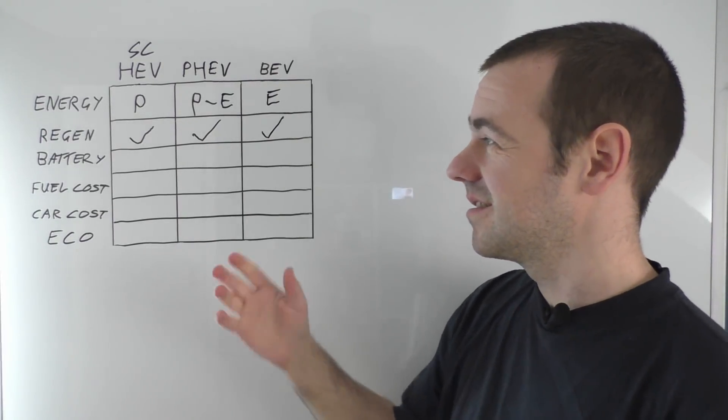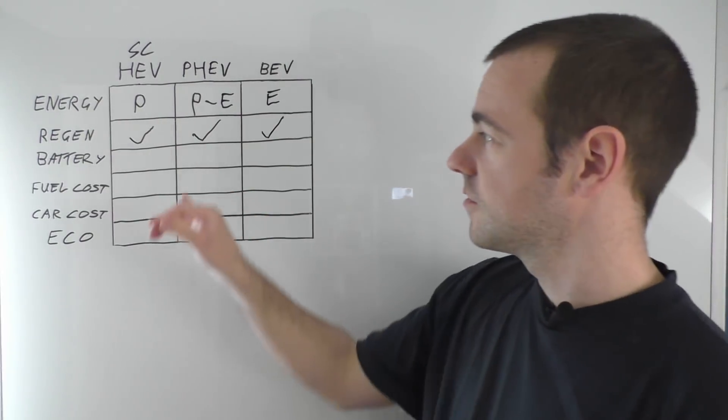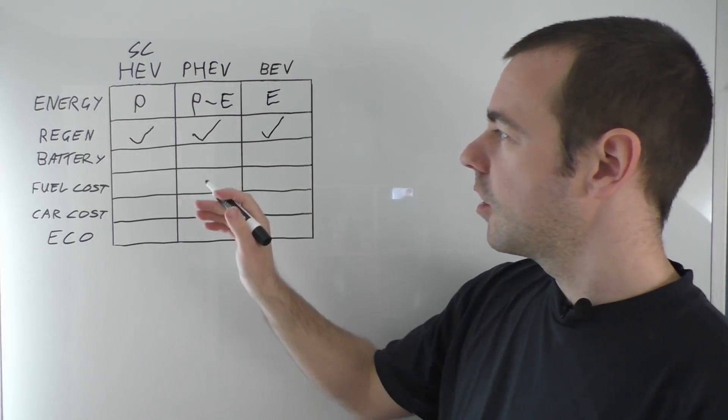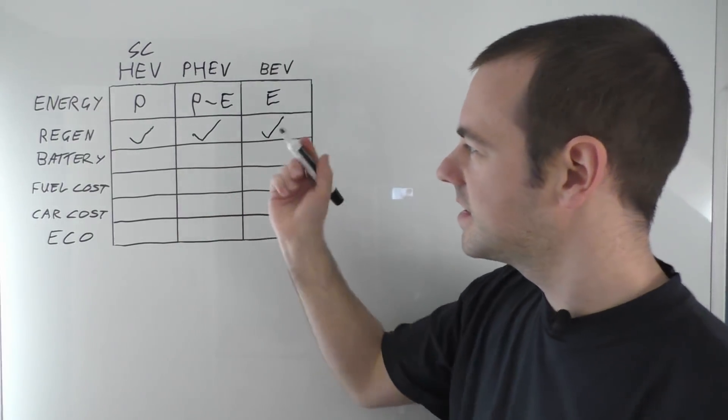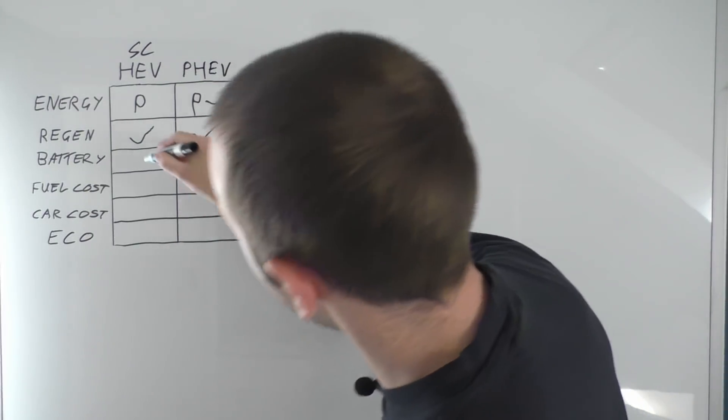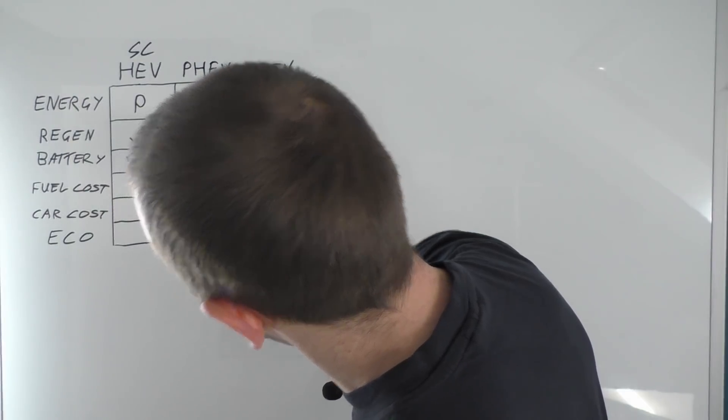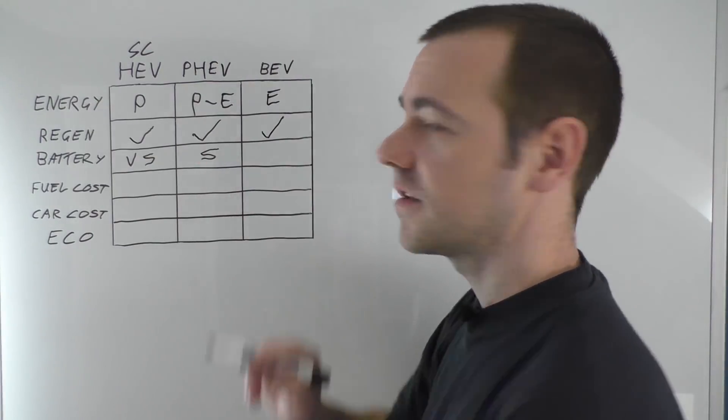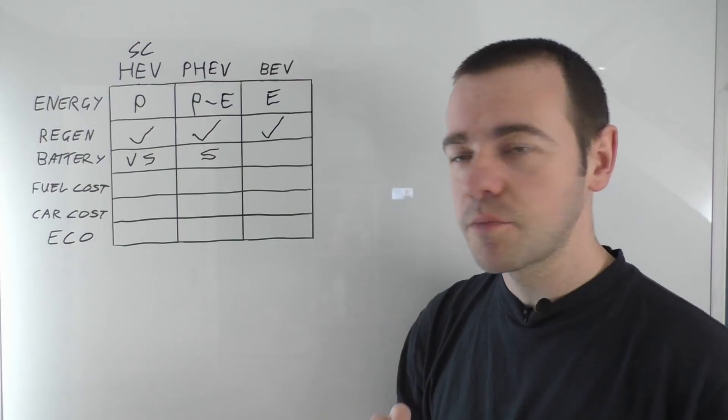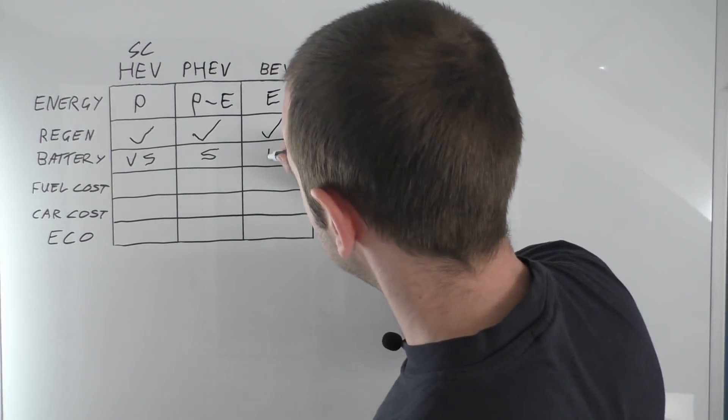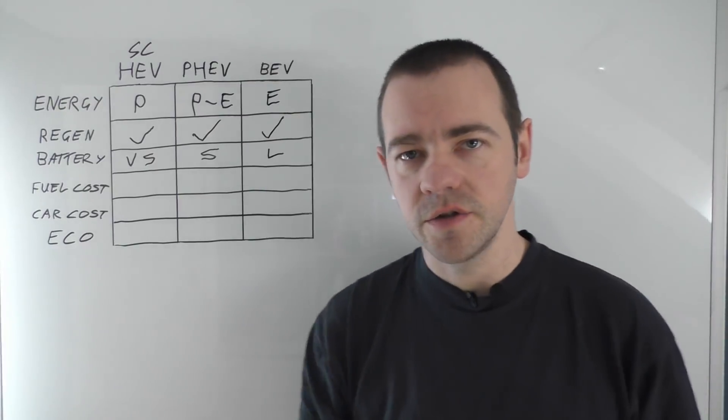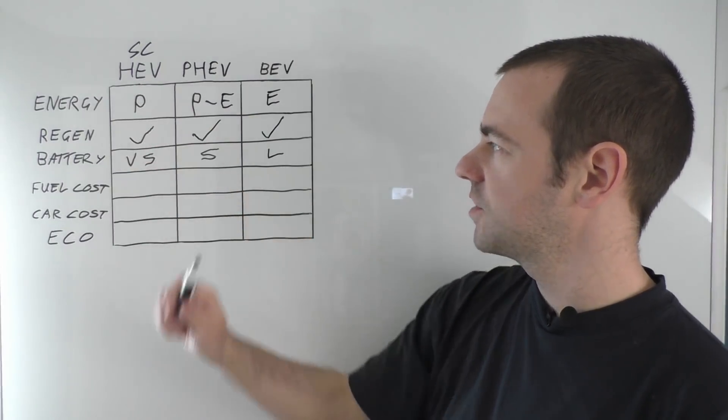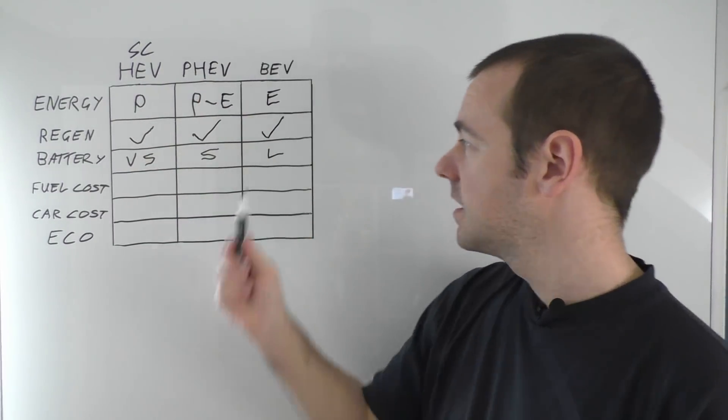Now battery, of course some of these will have larger sizes than what I'm going to suggest here, there's lots of variations, some plug-in hybrid batteries are getting quite large now. But relative to each other they all have this sort of level of battery. I'm going to say every self-charging hybrid battery by today's standards has a very small, VS, very small battery. A plug-in hybrid electric vehicle has a small battery, it's an S not a 5 I promise. And a battery electric vehicle, that has a large battery. So again there are many variations on the market, but roughly speaking comparable to each other you have a very small battery for a self-charging, a small battery for a plug-in hybrid, and a large battery for a battery electric vehicle.